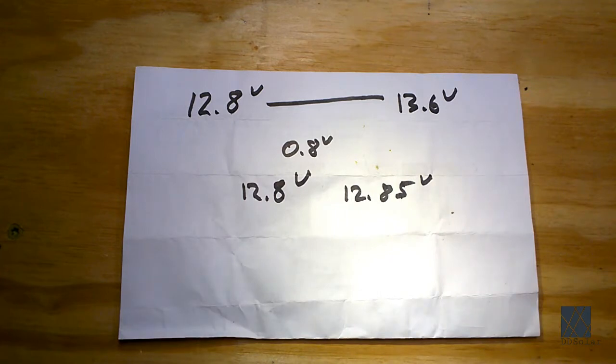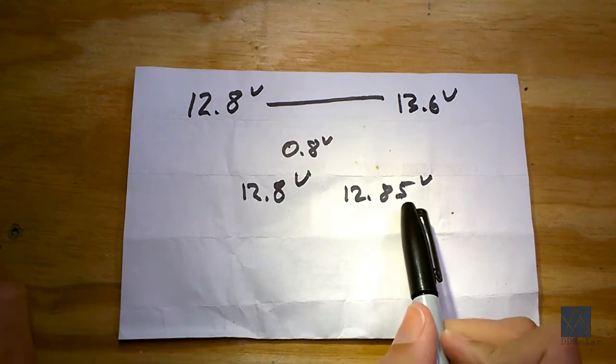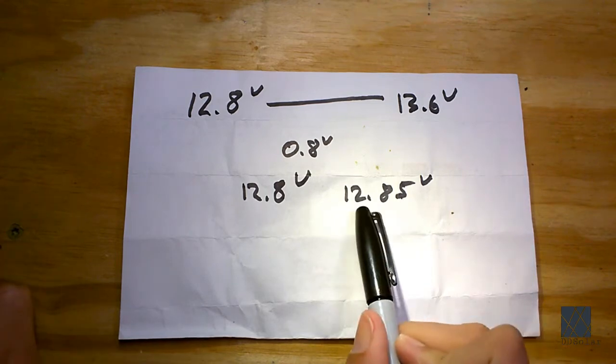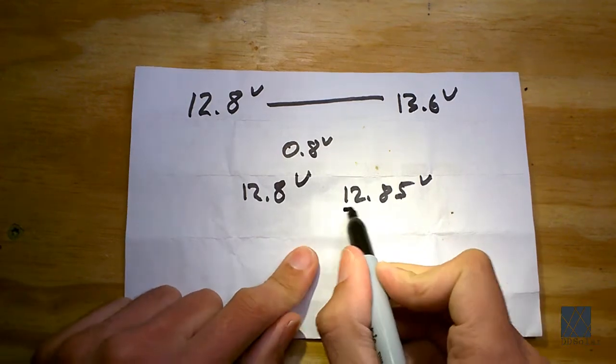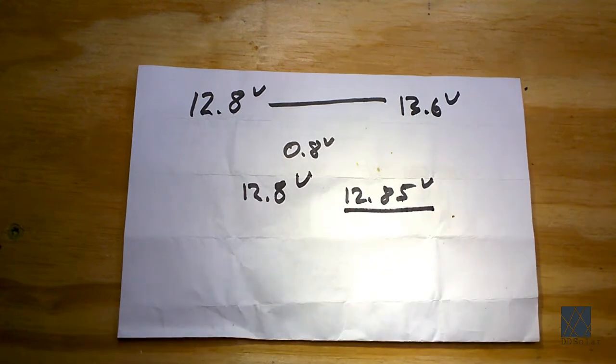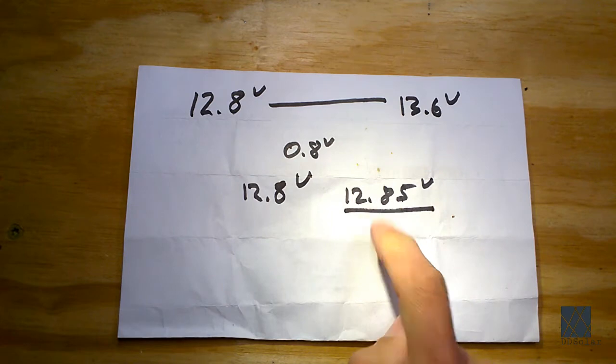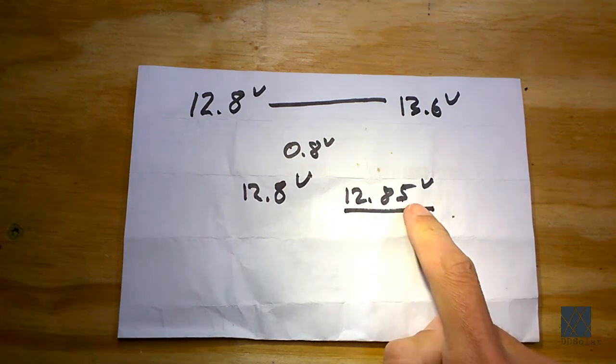But a voltmeter that has an additional digit after the decimal place, so in this case the one on the right, is a little bit better because for this digit to move one time, let's say it goes from eight to a nine, this digit here has to move ten times.